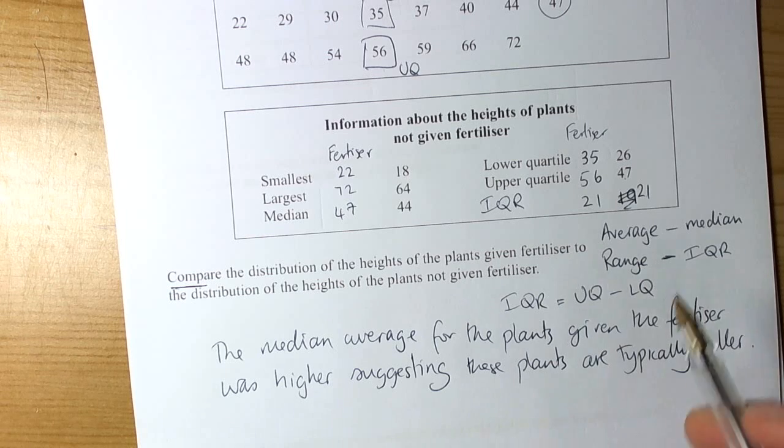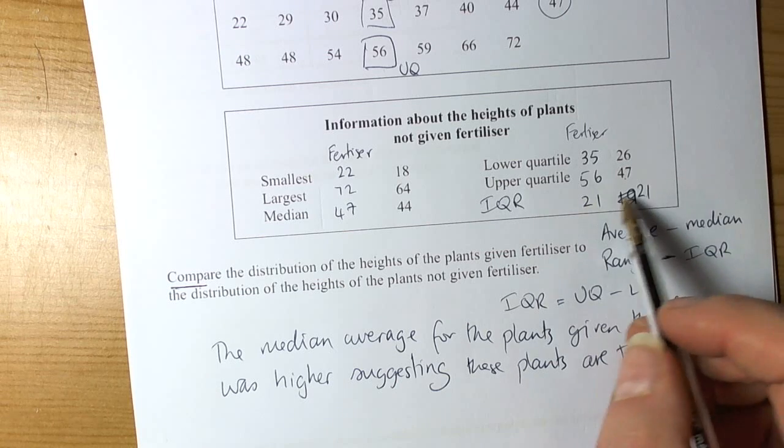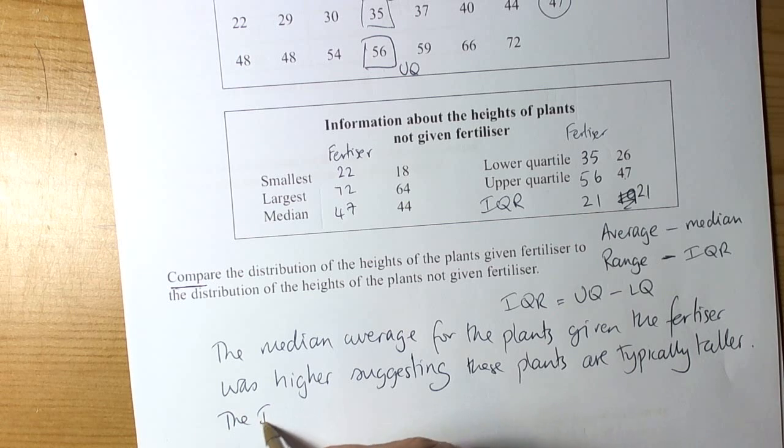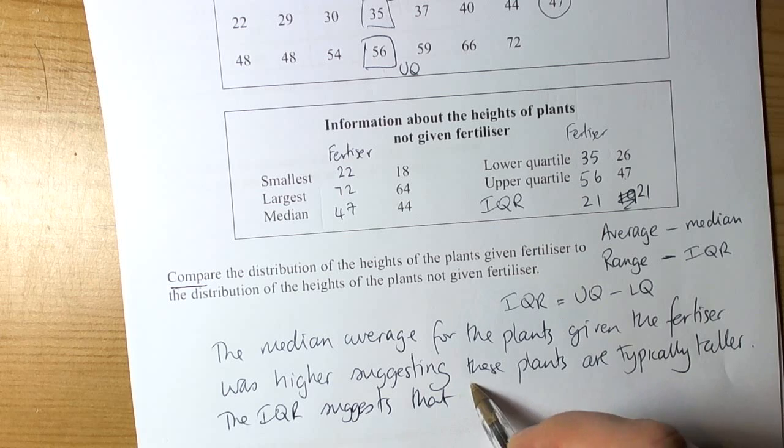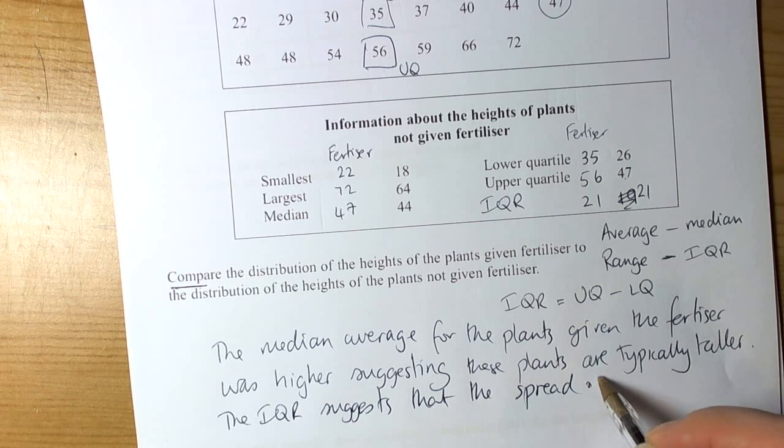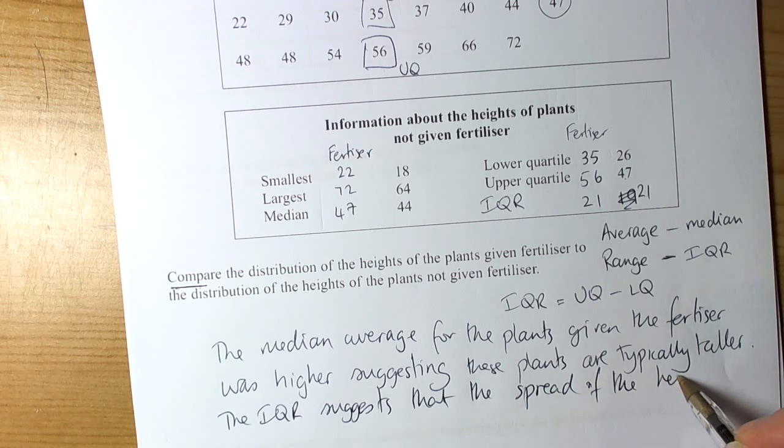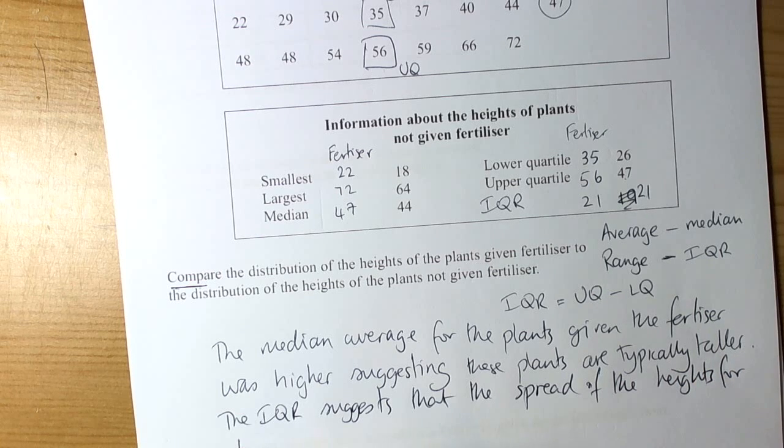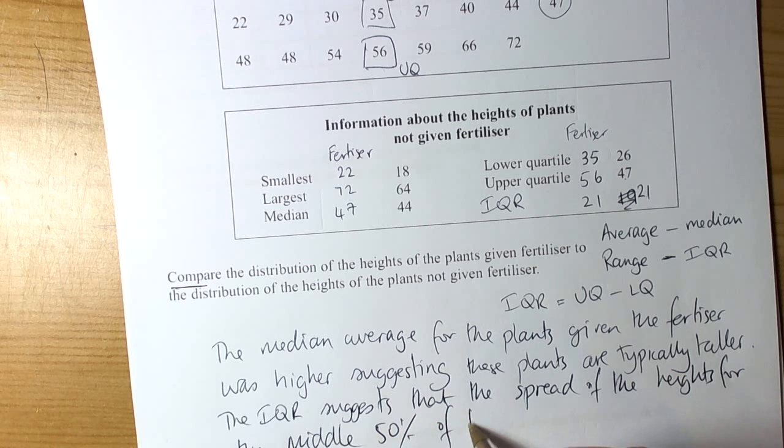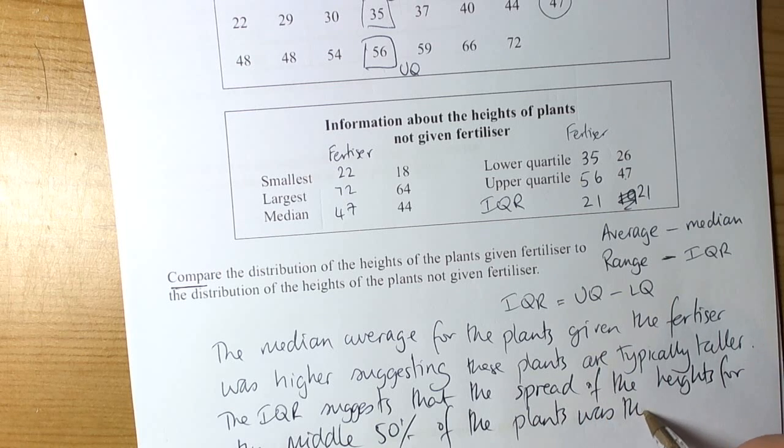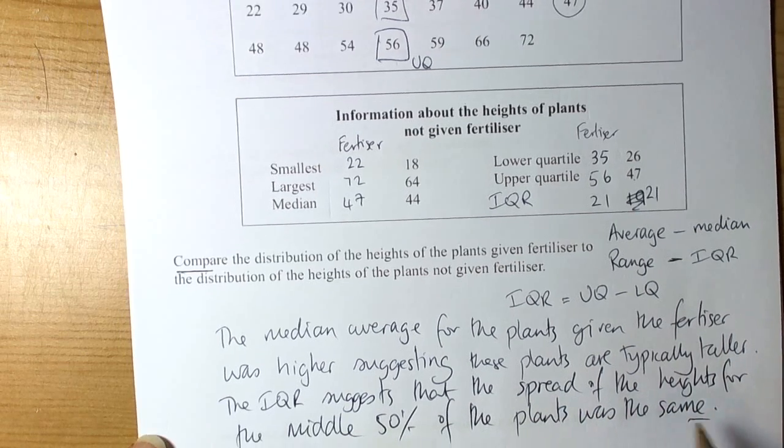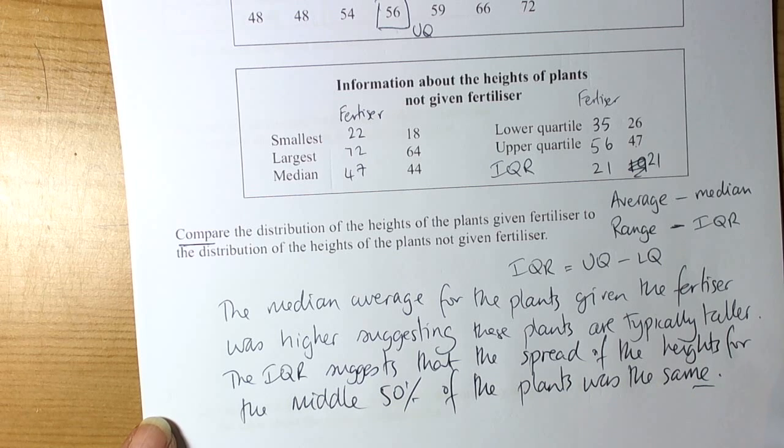The interquartile range was the same for both sets of data. We'll say the interquartile range suggests that the spread of the heights for the middle 50% of the plants was the same. In other words, they were equally spread out in the middle 50% area between the lower quartile and upper quartile positions.